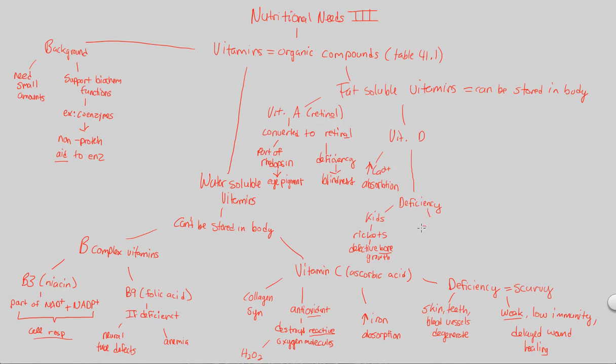But let's say adults are deficient in vitamin D. There's a different process here because adults are done growing. Adults will suffer from another bone problem known as osteomalacia, which refers to bone softening. Bone softening gives you the higher likelihood of bone fractures, and we can see the detrimental effects of vitamin D deficiency because of its relationship to calcium absorption and bone health.